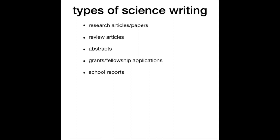Those are more professional-type things, but you'll probably encounter different types of writing before you get to that point. In school, starting as early as elementary school — if you're doing a science fair or a lab experiment like growing plants at different temperatures — you might write a lab report. These get more detailed as you advance in your education. In college is probably where you do the most lab reports, covering a single experiment: describing your methods, what you found, and that sort of thing.